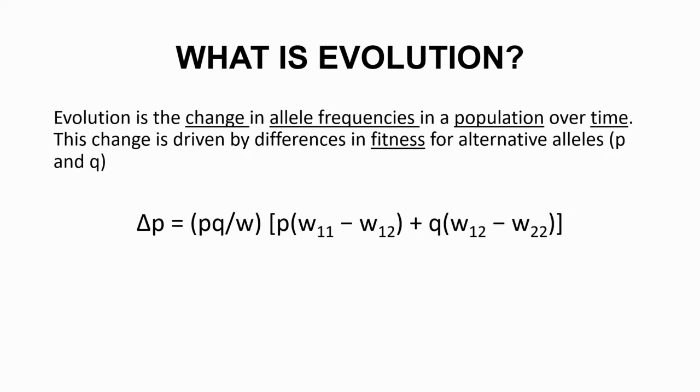The change is driven by differences in fitness and the fitness is of course what is behind natural selection. Different alleles, and we call them P and Q, have different degrees of fitness. We look at the equation W is fitness and the different Ws stand for the fitness of different alleles and different genotypes.